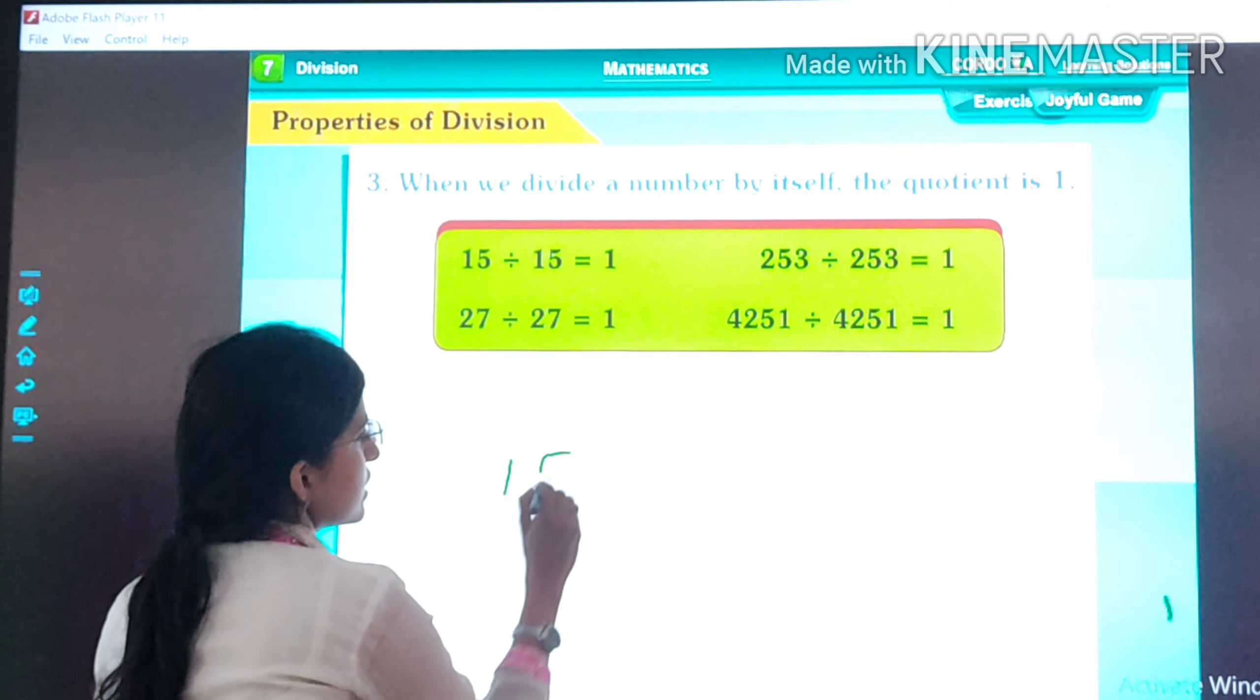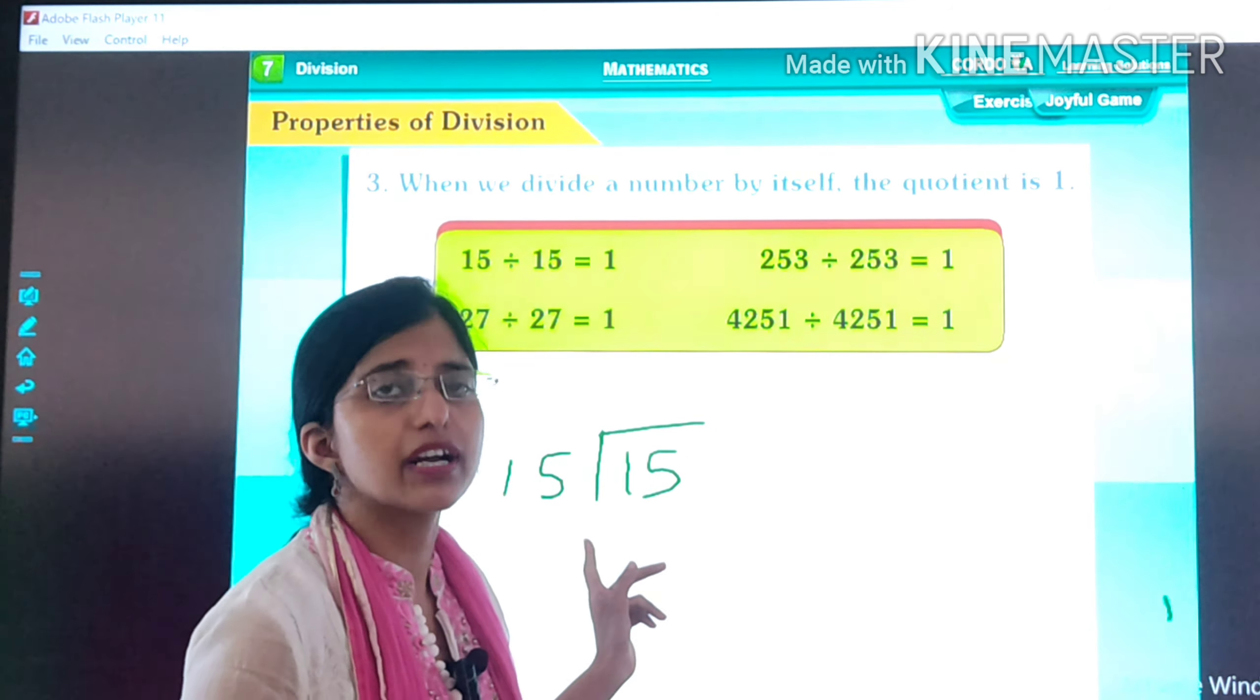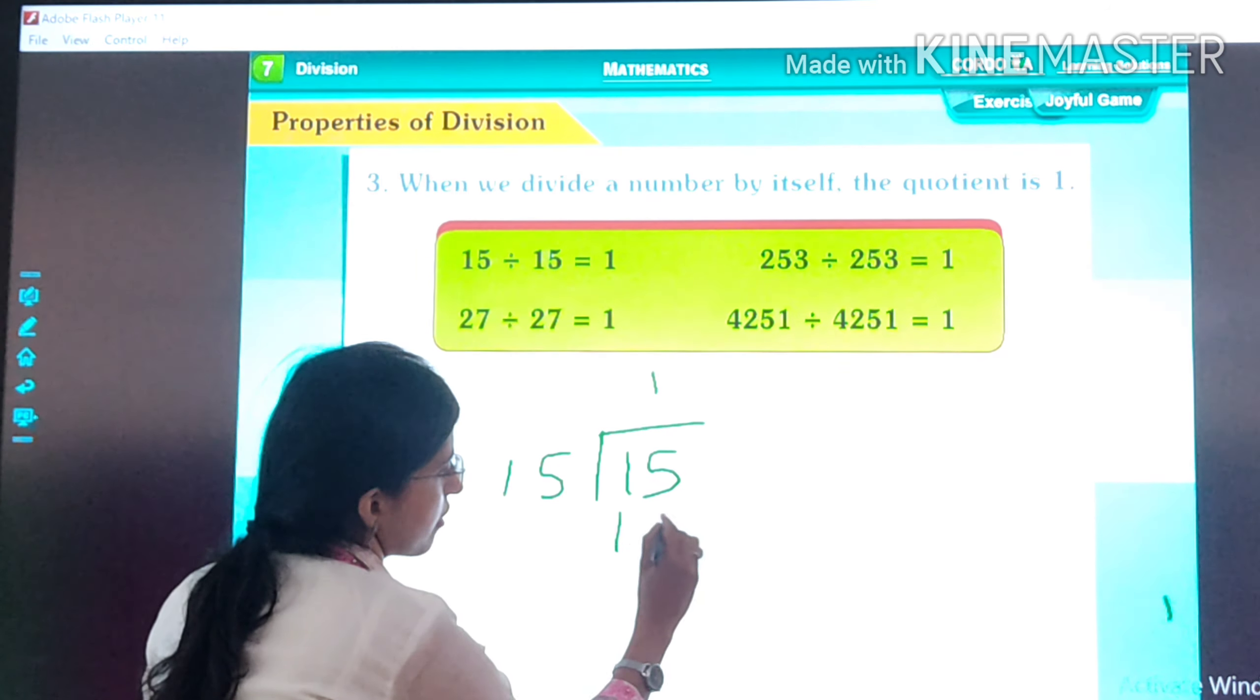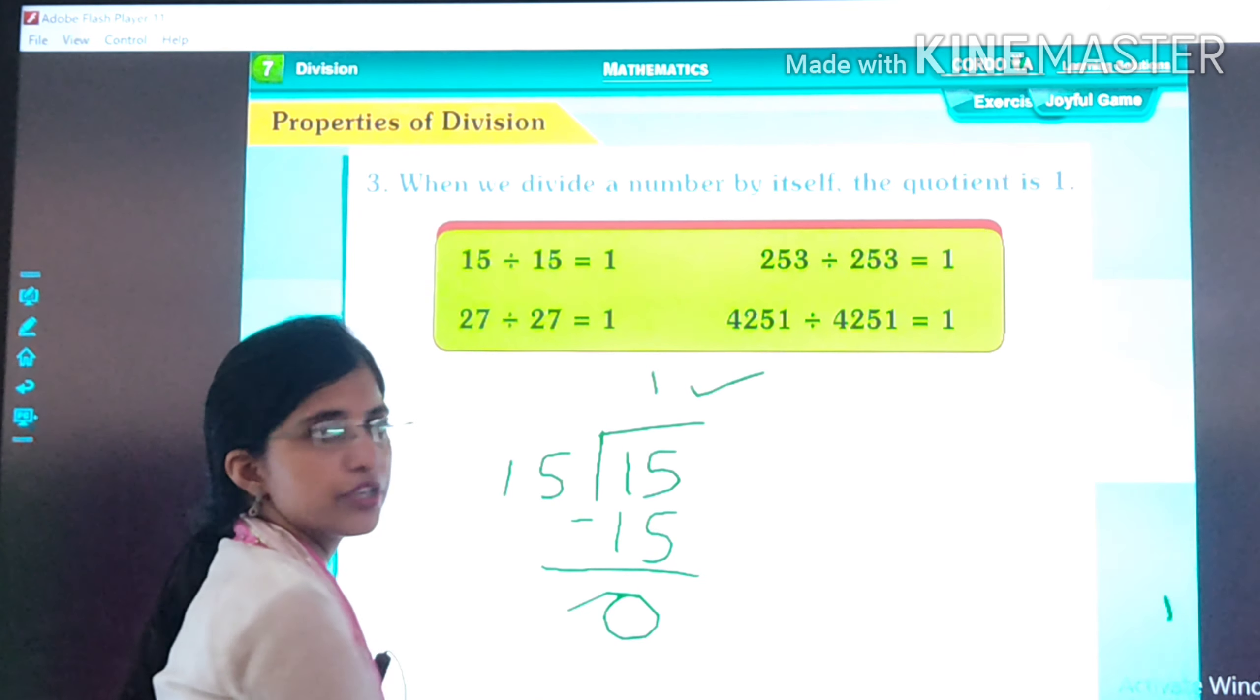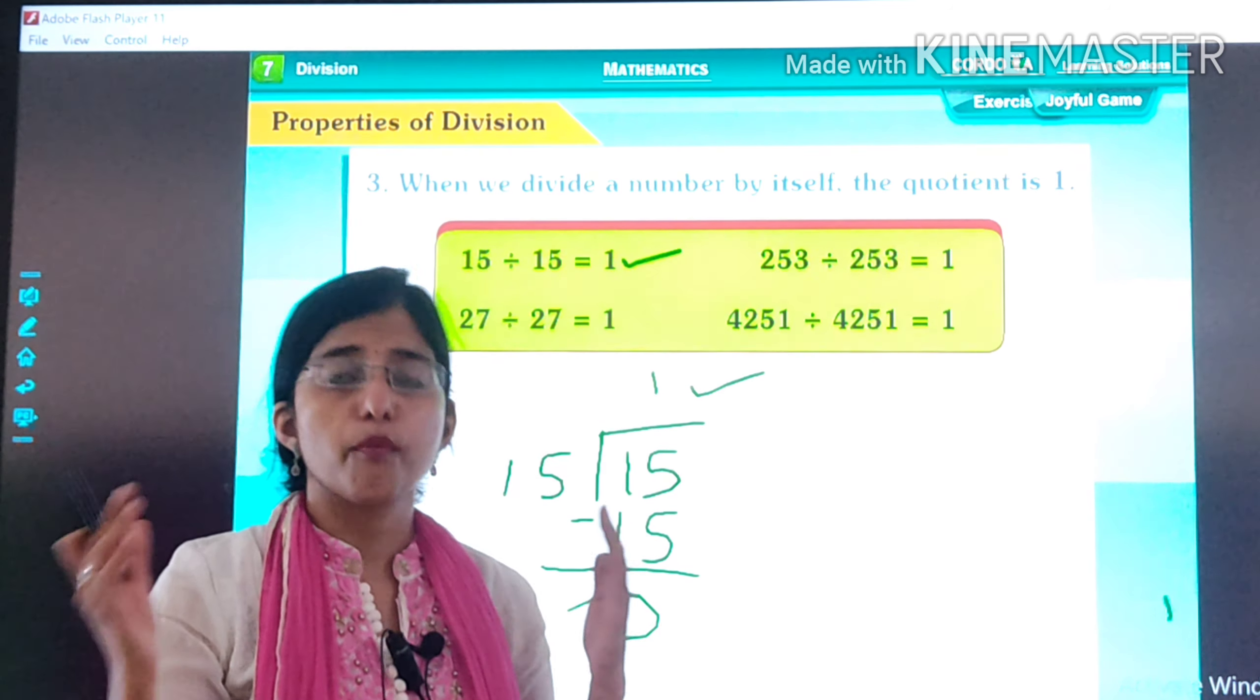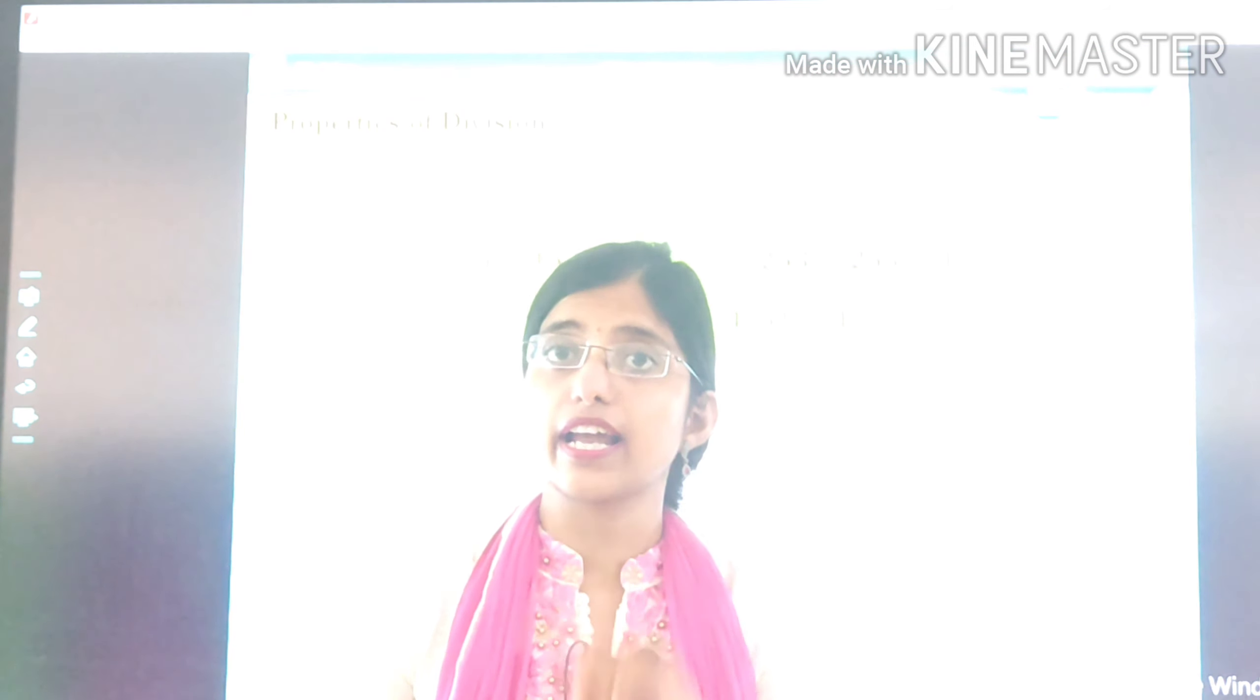If we are dividing 15 by 15. In the table of 15, when does it come? 15 ones are 15. So 15 ones are 15, then 0. So 1 is our quotient. So here we get 1. If we divide any number by itself, then our answer will always be 1.